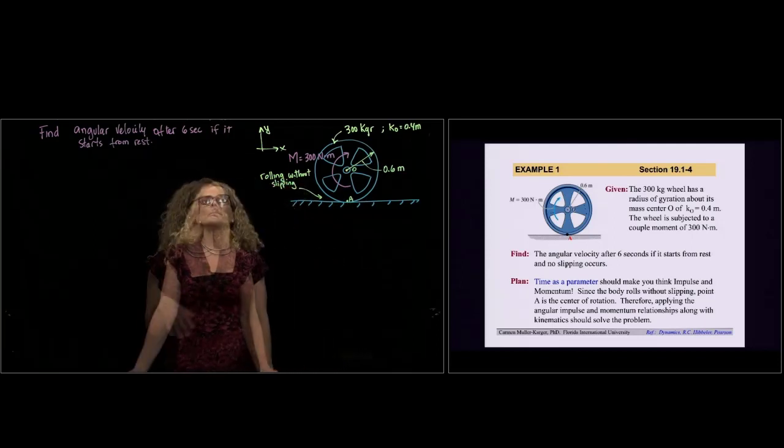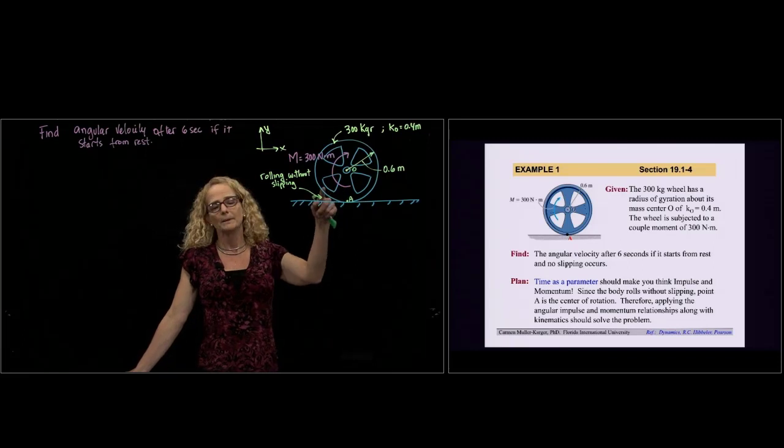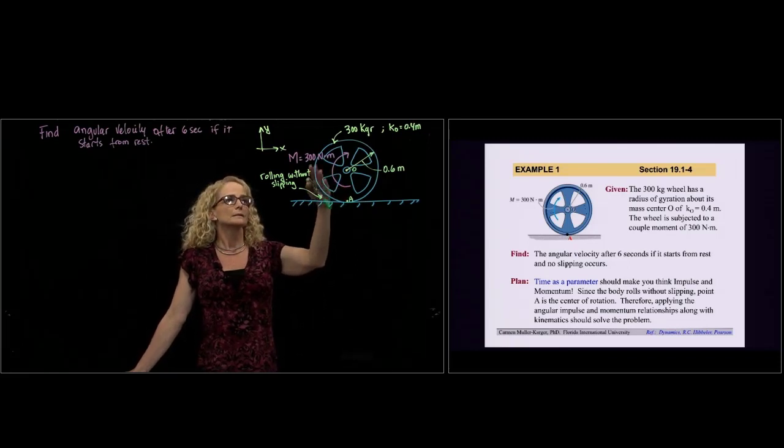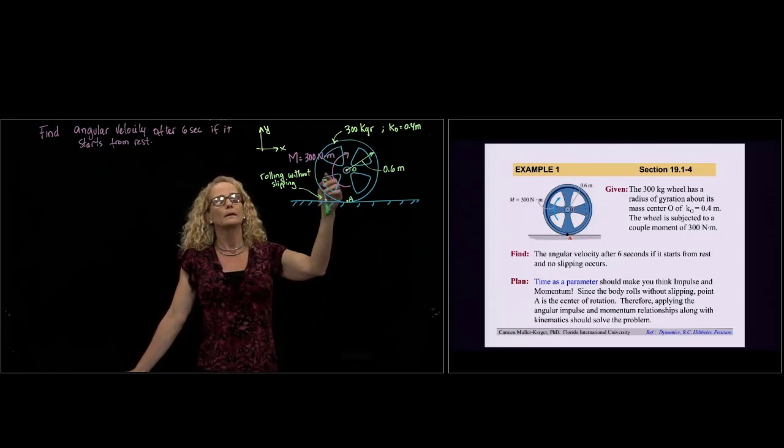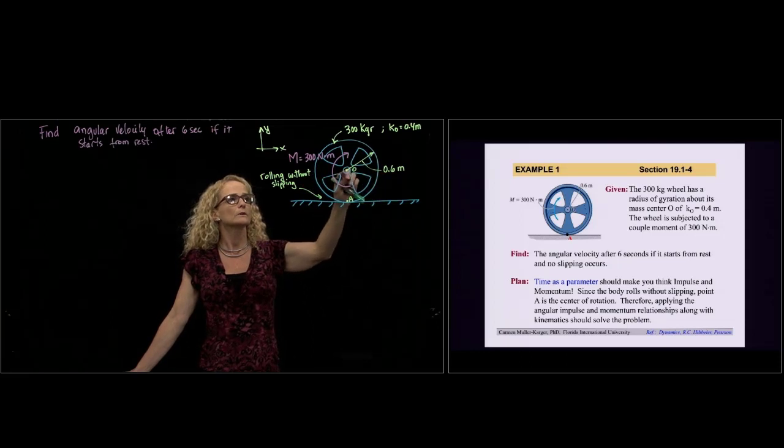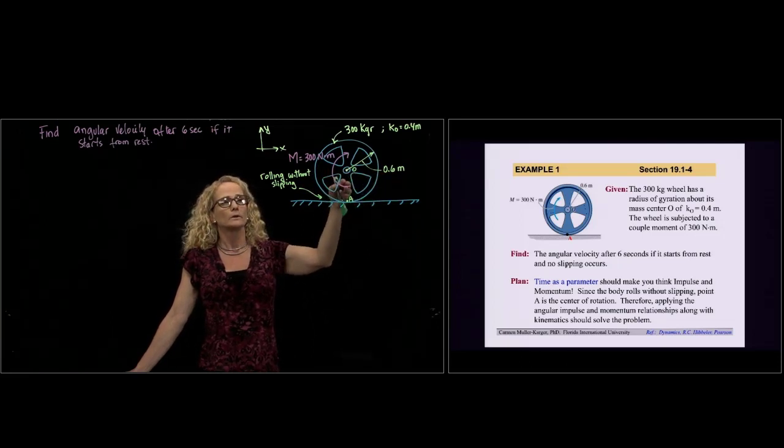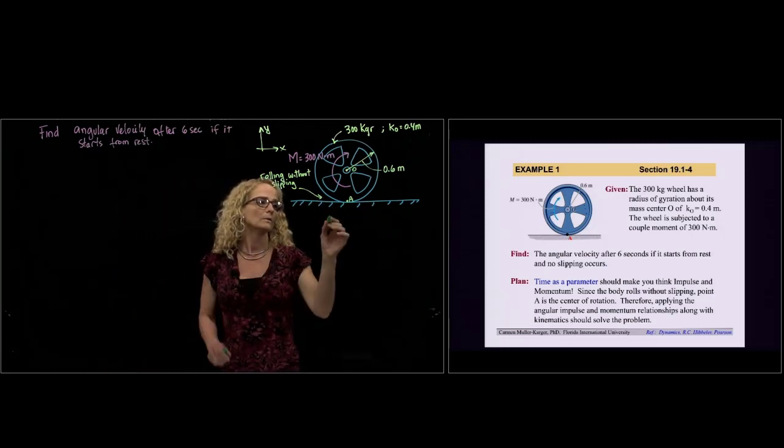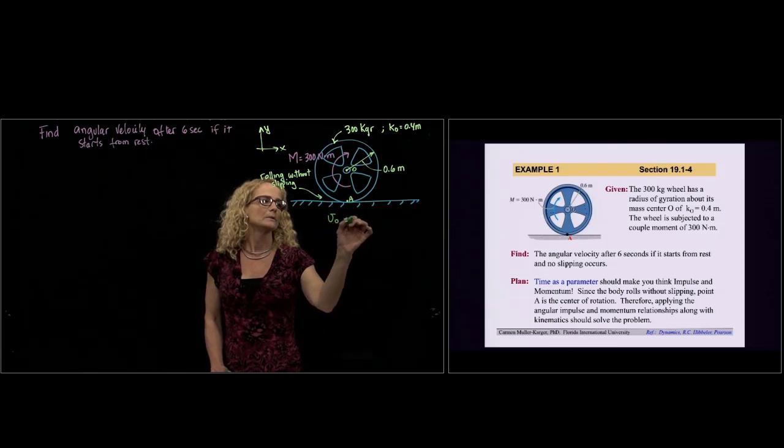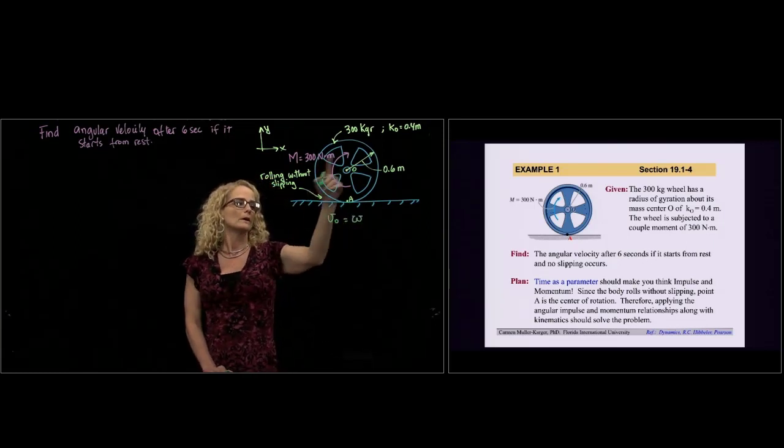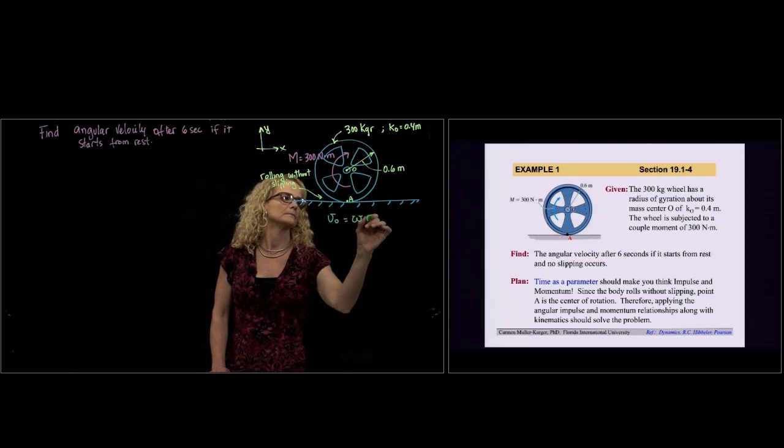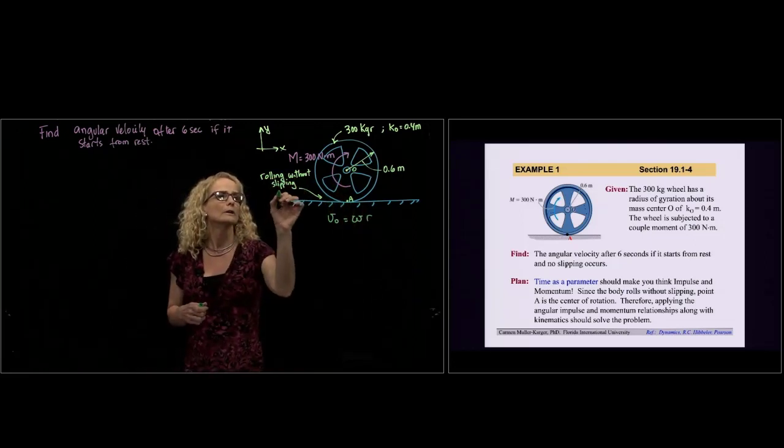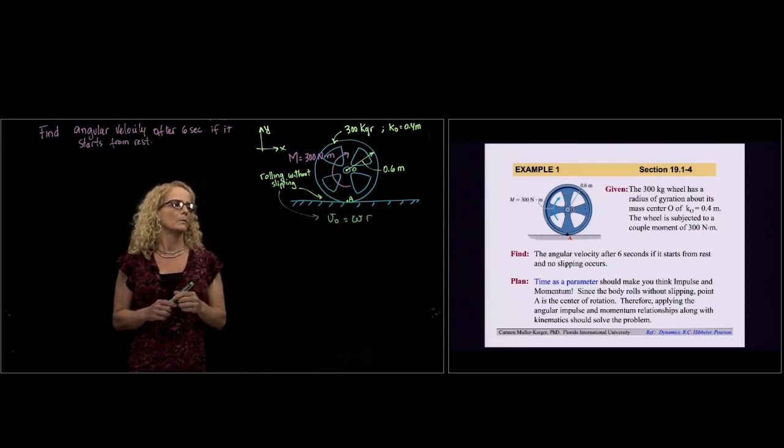This is a very important condition because when we have slipping, we could not relate the linear velocity of the center of mass with the angular velocity. But when we have rolling without slipping, we can say that the velocity of O equals the angular velocity times the radius. That condition gives me this equation.